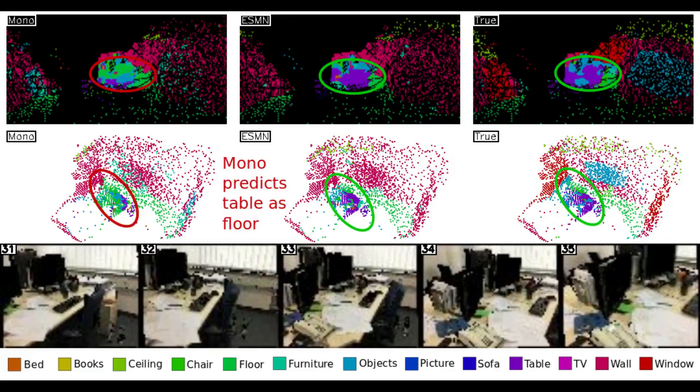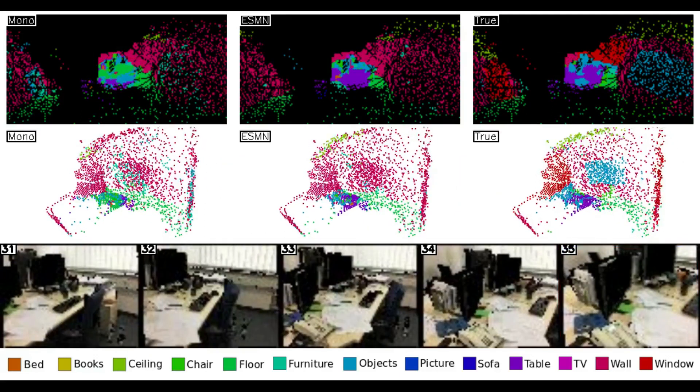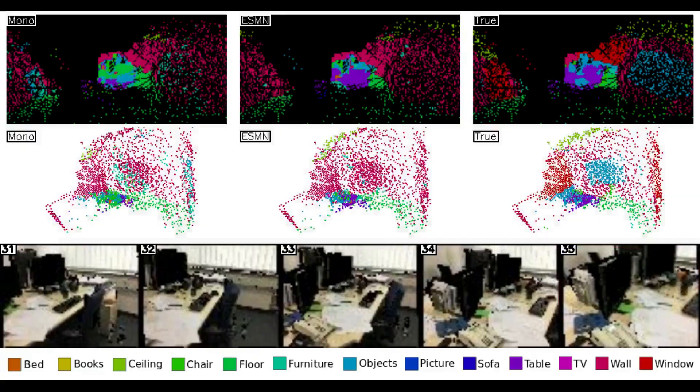Mono later mistakes the table as floor. This is understandable, as the table is the lowest visible plane. ESMN uses the wider surrounding context to avoid this mistake.